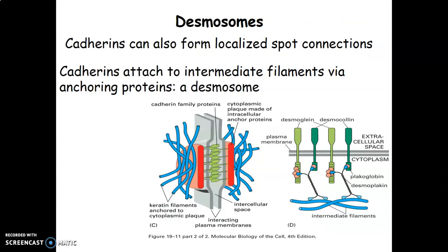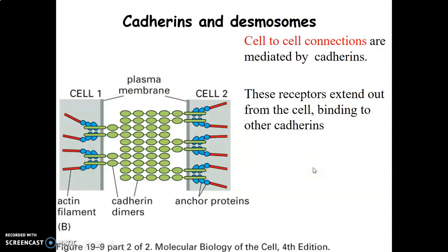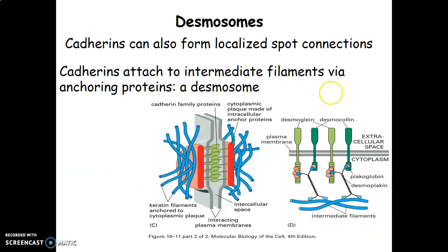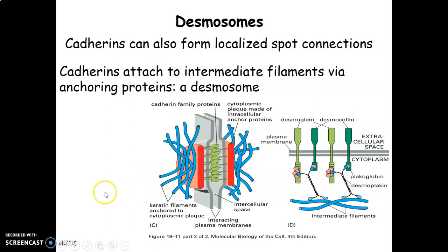Desmosomes contain desmogleins and desmocollins. Cadherins form localized spot connections and can attach onto intermediate filaments via desmosomes. These desmosomes contain desmogleins and desmocollins, and the cadherins here attach onto cytoplasmic filaments or the cytoskeleton.